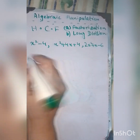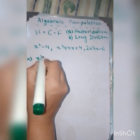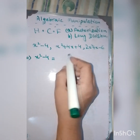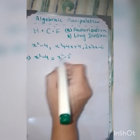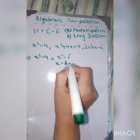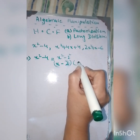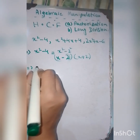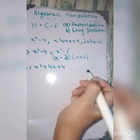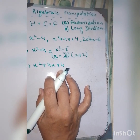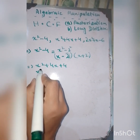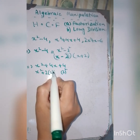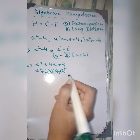Taking the first expression, x² - 4, you can see it is a difference of squares formula. We write it as (x - 2)(x + 2). The second expression is x² + 4x + 4. You can observe it is a perfect square: x² + 2·x·2 + 2², which is the expanded form of (x + 2)².